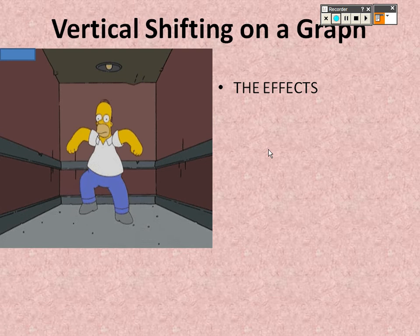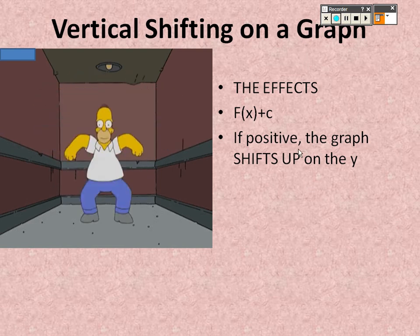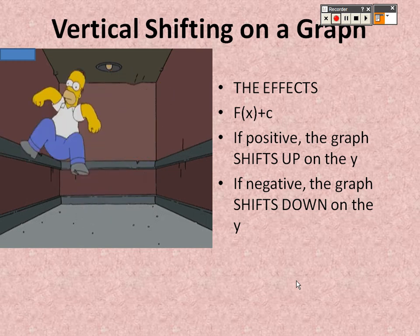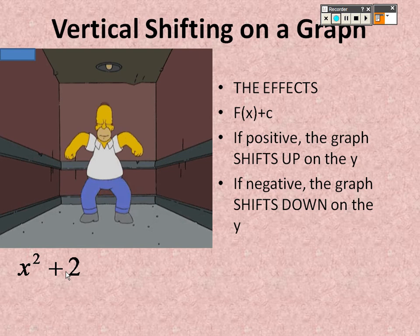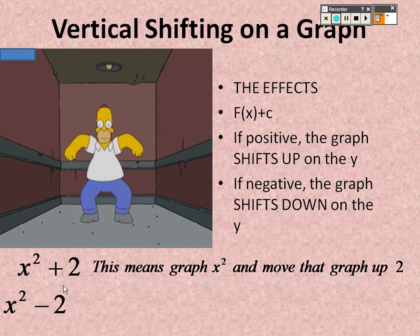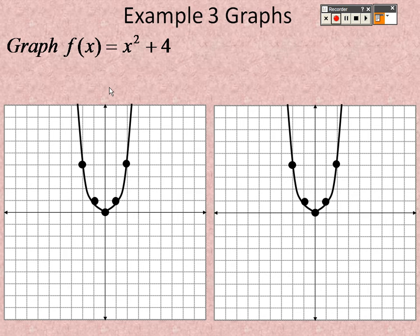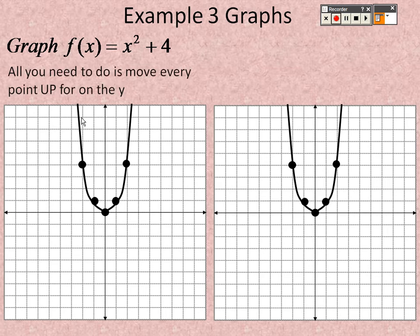For vertical shifting on a graph: f(x) plus c — if c is positive, the graph shifts up; if negative, the graph shifts down. For example, x² + 2 moves every point up 2, and x² − 2 moves every point down 2. With x² + 4, you take every single point and move them all up 4. Moving each point up 4 gives the new graph.